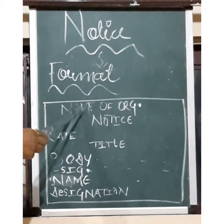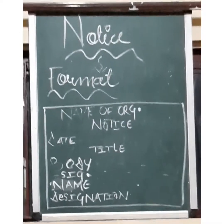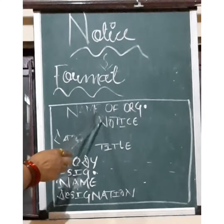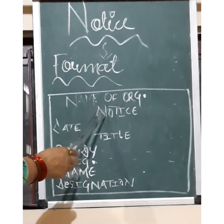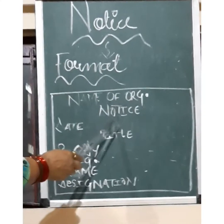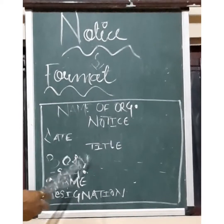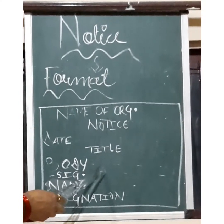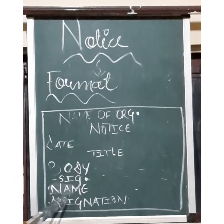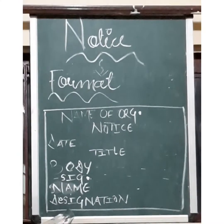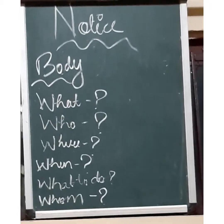Now let us look at the format of notice writing. A rectangular box needs to be made when we are going to write the notice. In that box, in the top middle position, the name of the organization which is issuing the notice has to be written. Then right below it, the word NOTICE is to be written. Then on the left hand side, write the date on which the notice is issued. Then below it, in the middle, write the title of the notice. Then below it, the body of the notice comes, and after the body is completed, the signature, name and designation of the undersigned authority comes.